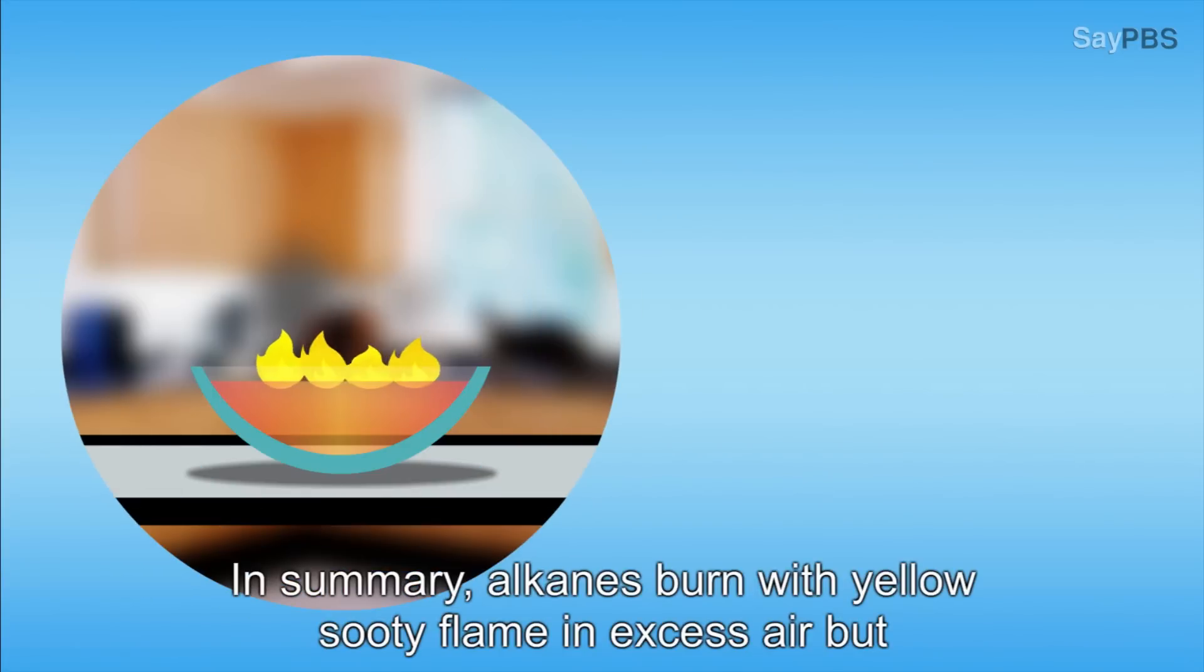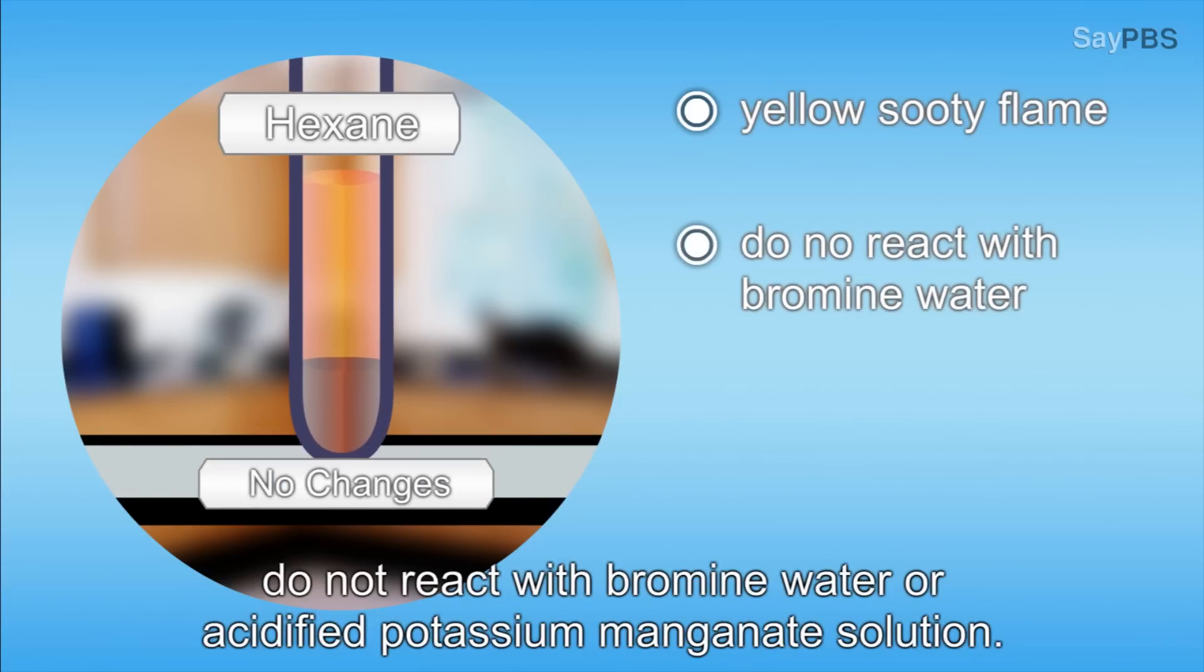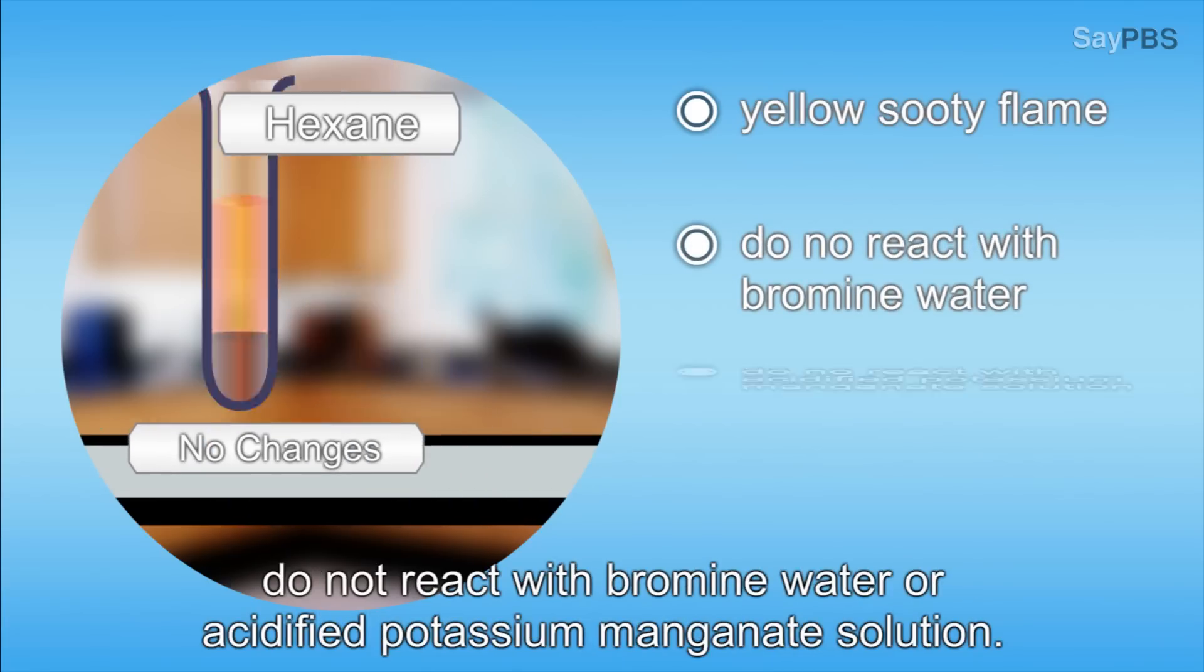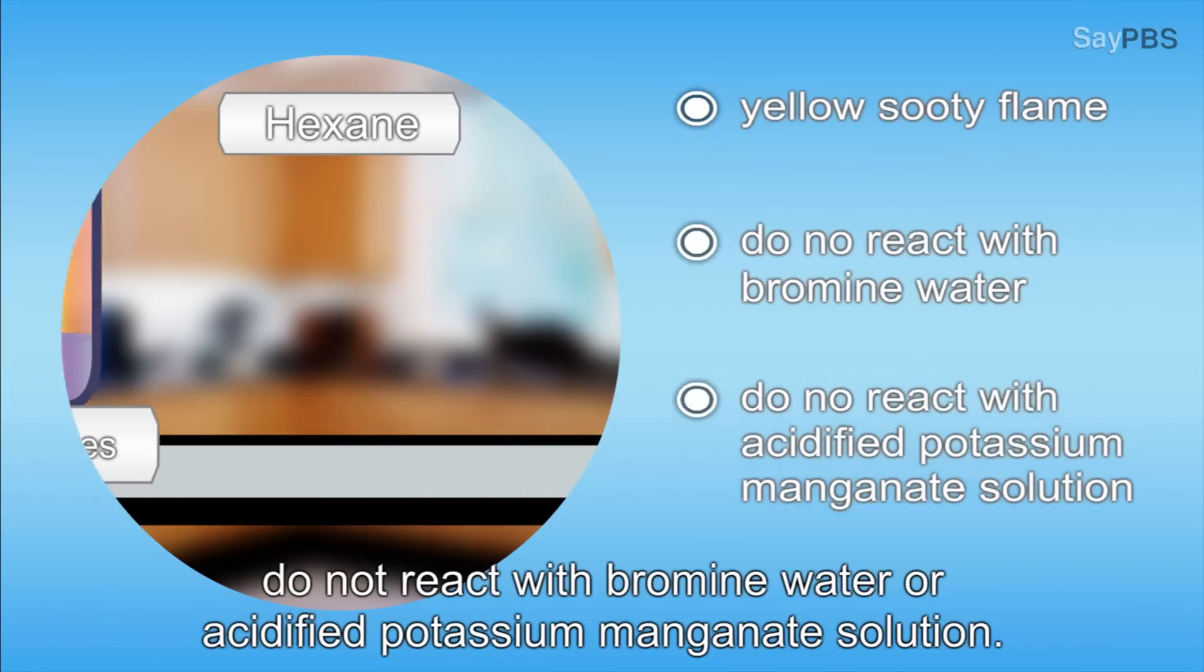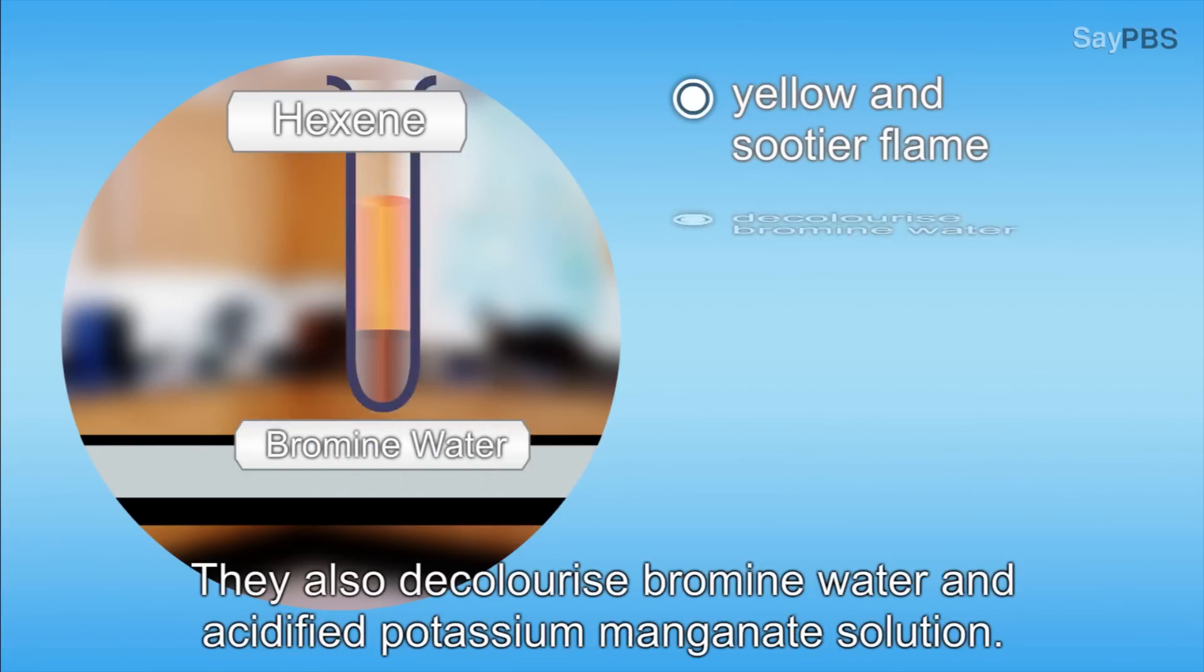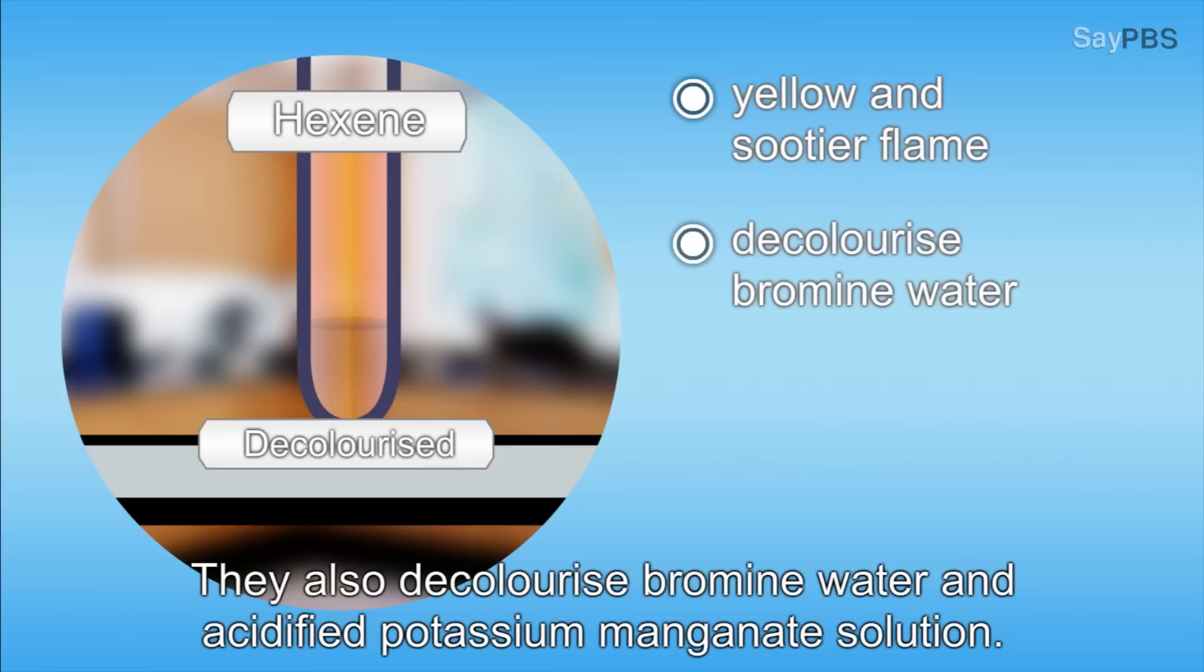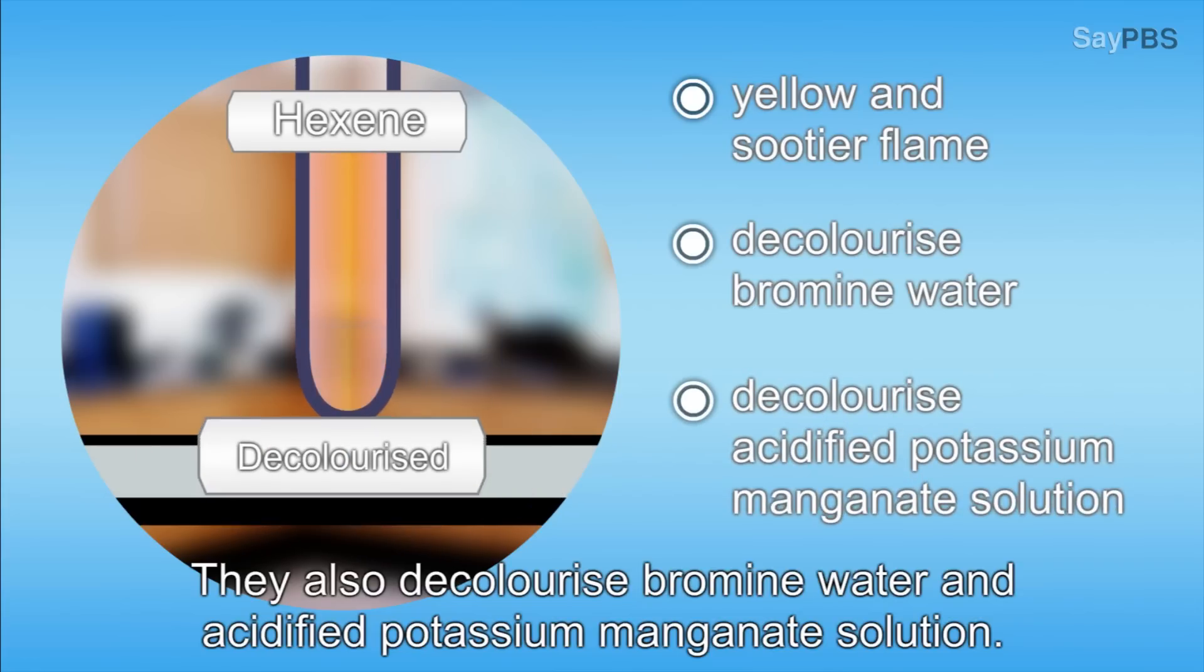In summary, alkanes burn with yellow sooty flames in excess air but do not react with bromine water or acidified potassium manganate solution. Alkenes also burn with excess air but with a sootier flame. They also decolorize bromine water and acidified potassium manganate solution.